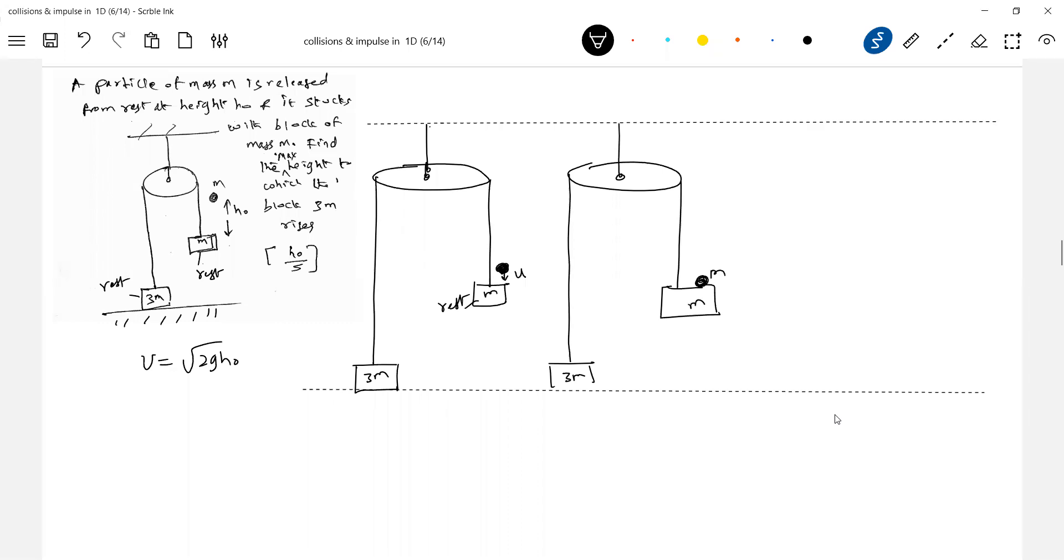So in what direction the impulse acts? The direction of tension will be the direction of impulse in the string. The direction of normal contact acting on the body will be the direction of the impulse. Impulse is force into time. The tension will act away from the body, so you have to show that impulse also away from the body.